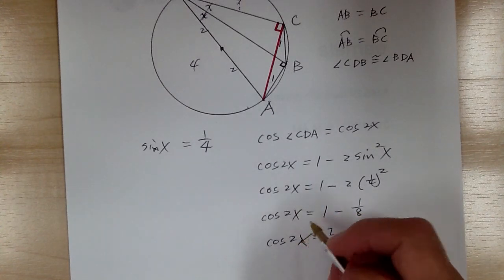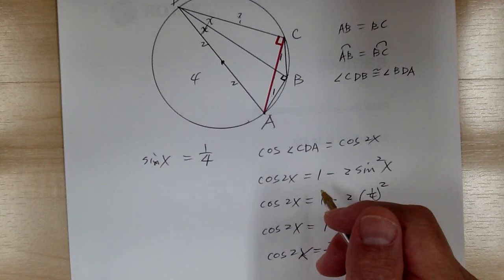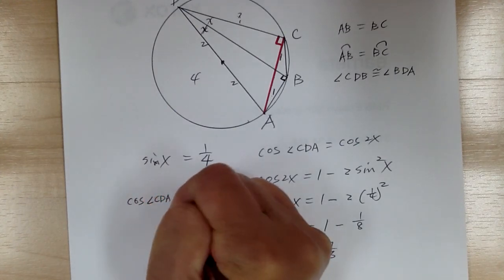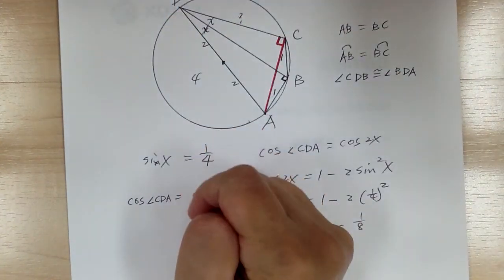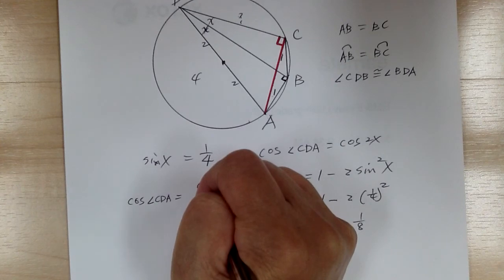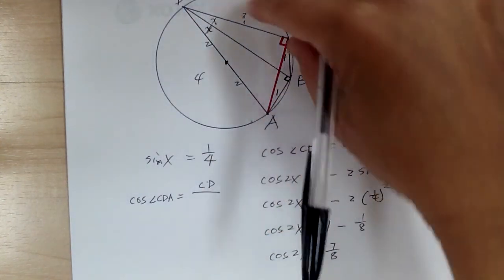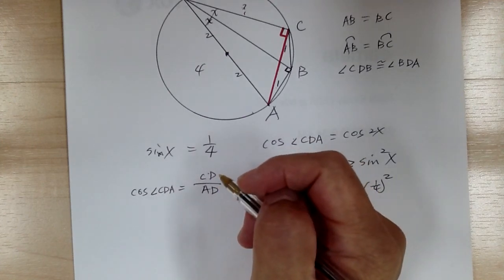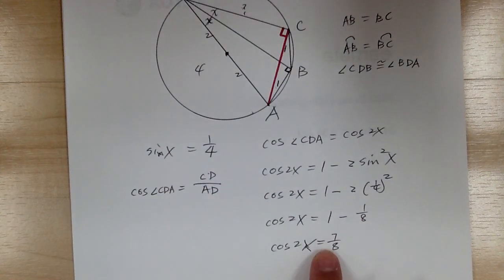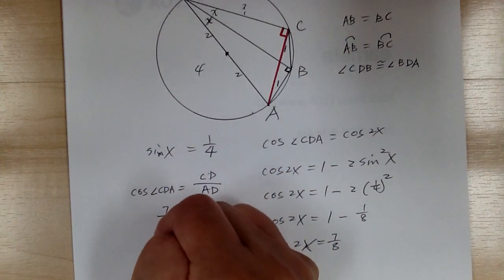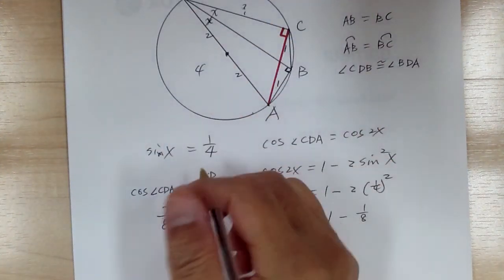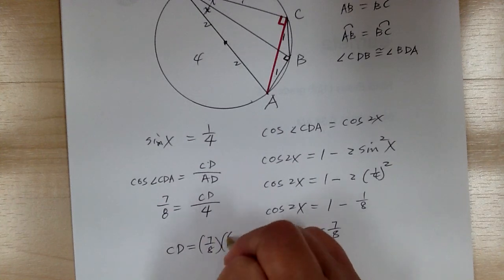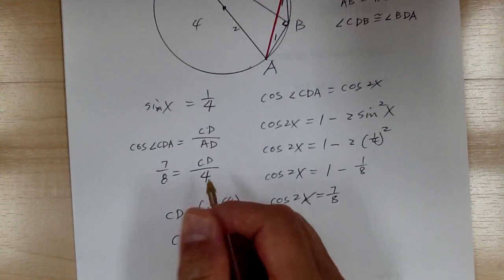Now cosine of angle CDA equals CD over AD. We know cosine of CDA is 7/8 and AD is 4, so CD equals 7/8 times 4 equals 7/2.